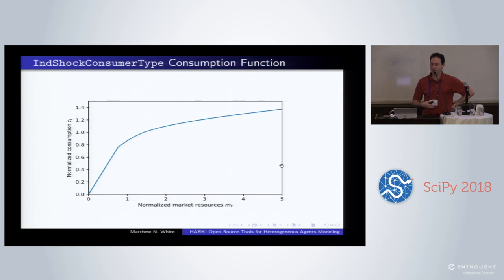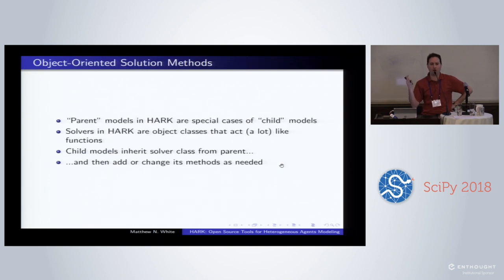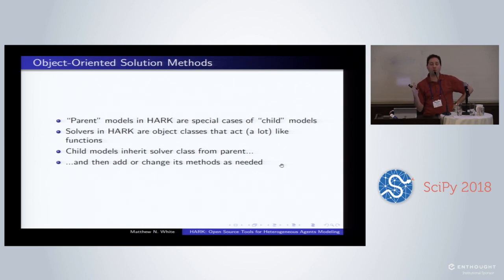This is the consumption function that comes out of that model. Just to give you a sense of what I mean by object-oriented solvers and how we're trying to write HARK to be very easily extensible: the solution methods themselves are object-oriented. The function — or method — that solves the one-period problem is in fact an object itself.